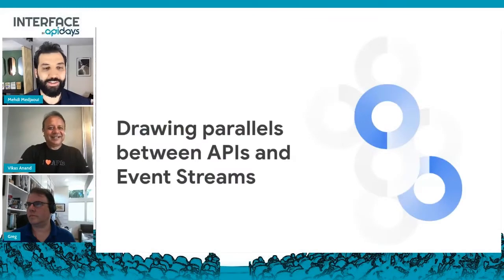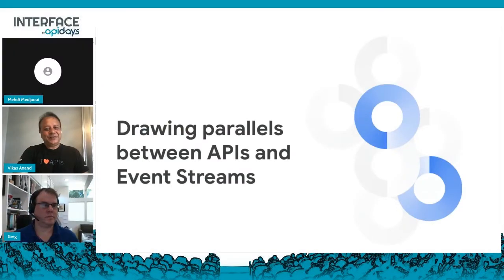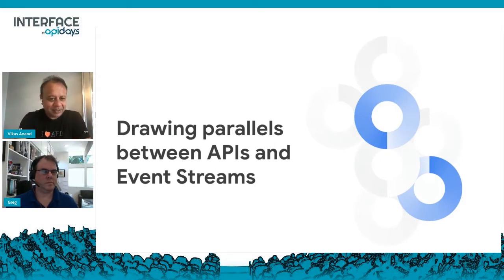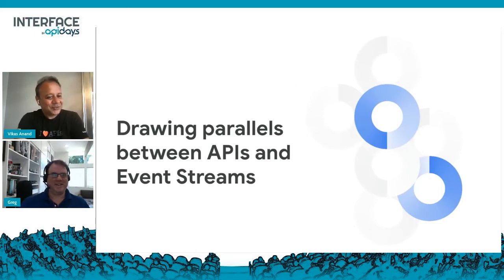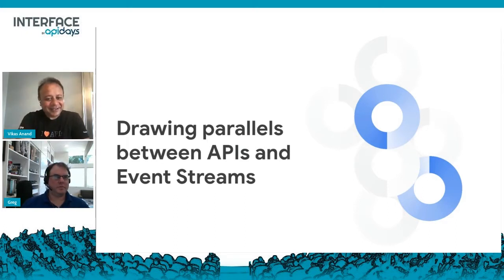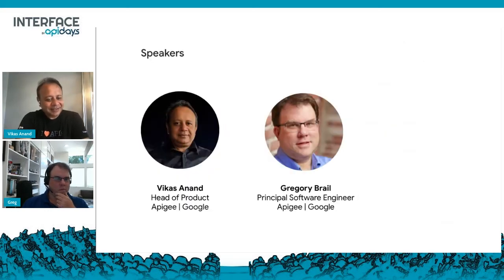We continue the program with the State of the API Economy. Vikas comes on stage, and we also invite Greg. We do have a surprise — instead of talking about the State of the Economy, we're going to talk about drawing panels between APIs and event streams. APIs help you be more dynamic and change, and this is a great example of that.